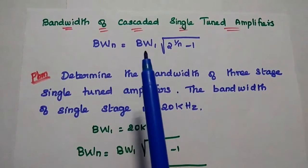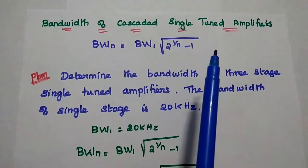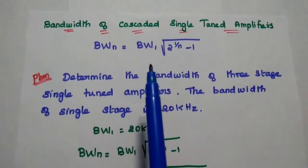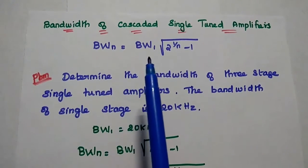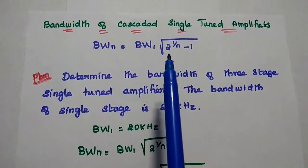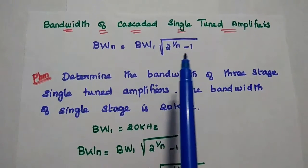Next one is bandwidth of cascaded single tuned amplifiers. For n-stage single tuned amplifiers, the overall bandwidth is BW1 into square root of 2 power 1 by N minus 1.